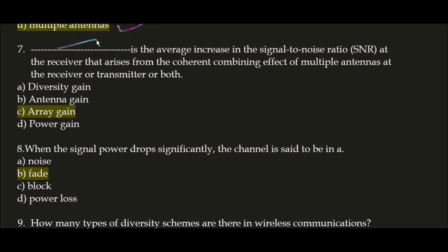Next question: blank space is the average increase in the signal-to-noise ratio at the receiver that arises from the coherent combining effect of multiple antennas at the receiver, transmitter, or both. The correct answer is option C: array gain.